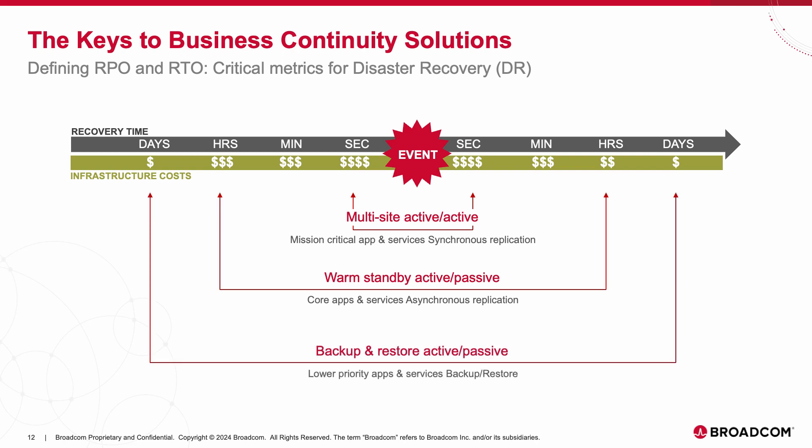For core applications and services that have medium priority, RTO and RPO values may fall within the range of hours. These solutions are generally less expensive, typically consisting of warm standby active-passive setups that use asynchronous replication. For lower priority applications and services, where RTO and RPO values may extend to days, the solutions are the least expensive and suitable for backup and restore active-passive setups. Effective disaster recovery planning also requires careful consideration of RTO, RPO, and data integrity across diverse application portfolios.